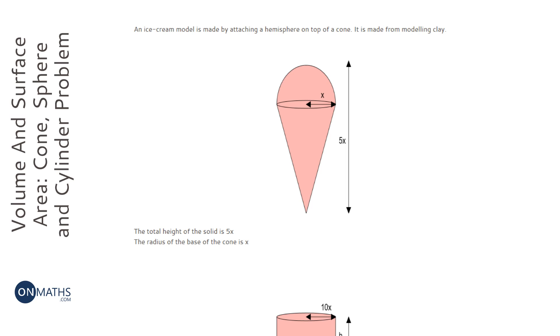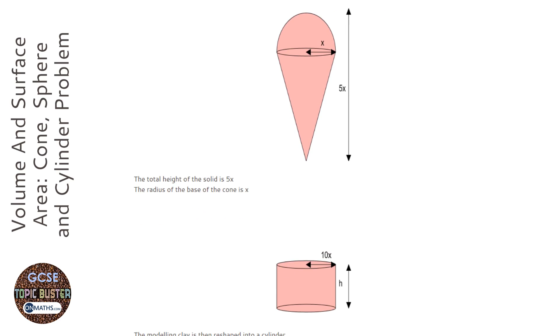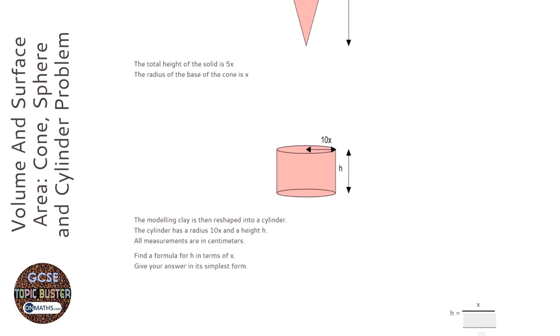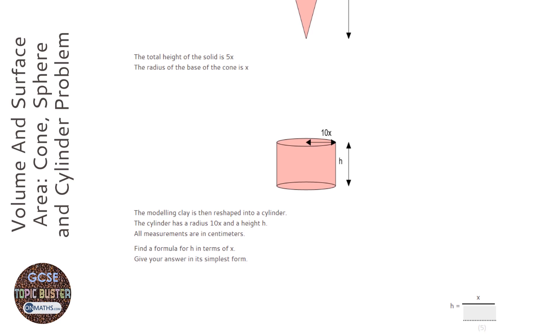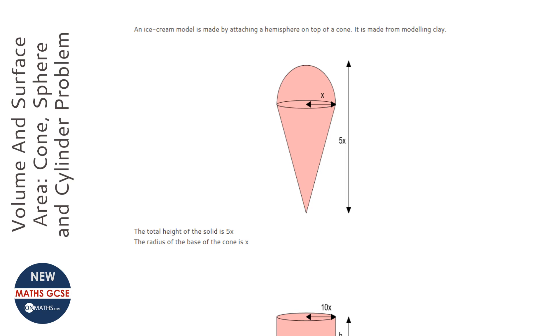Okay, so this doesn't seem like the easiest question because there's three shapes going on, there's no numbers in it at all, and we're asked to find a formula. So the first place I'd start is working out what are the formulas we'll need. Well, let's have a look.